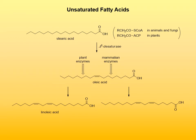Each additional double bond introduced in polyunsaturated fatty acids is always placed one CH2 group away from the existing double bond, so double bonds are separated by a methylene group — they are not conjugated. Mammals need polyunsaturated fatty acids because they are precursors of eicosanoids, which will be covered later. Those polyunsaturated fatty acids require double bonds both before and after the delta-9 position, meaning mammals cannot synthesize them and must obtain them from the diet. Such fatty acids are called essential fatty acids; linoleic acid is an example of an essential fatty acid for mammals.